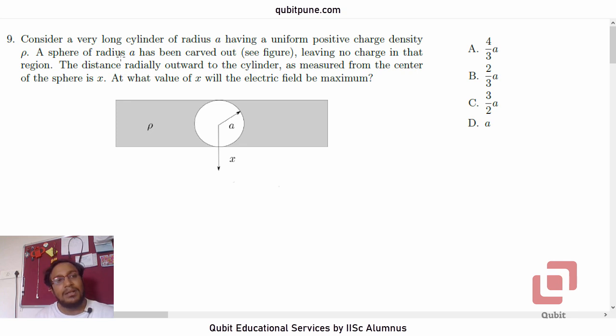The statement of the problem is: consider a very long cylinder of radius A having a uniform positive charge density rho. A sphere of radius A has been carved out as shown in the figure, leaving no charge in that region. The distance radially outward to the cylinder as measured from the center of the sphere is x. At what value of x will the electric field be maximum?